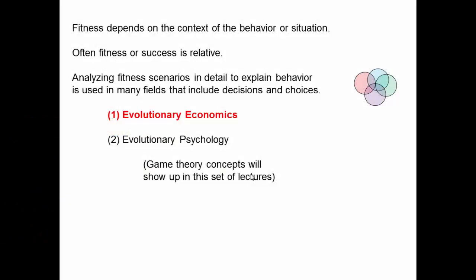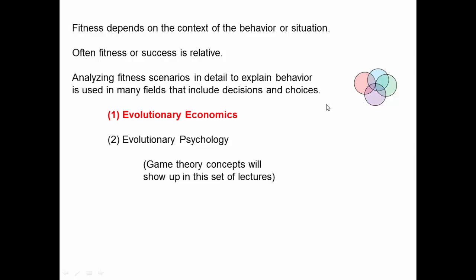As we saw in the previous videos looking at game theory, fitness depends on the context of the behavior or situation. Having spines as a Daphnia depended on whether there were predators or not. Being a hawk or a dove, the fitness depended on whether there were other hawks or doves. Often fitness or success is relative. Analyzing fitness scenarios in detail to explain behavior is used in many fields that include decisions and choices — evolutionary biology, but also other fields.